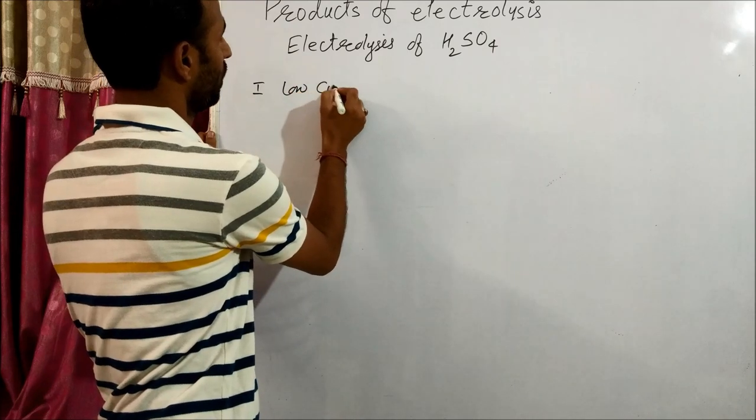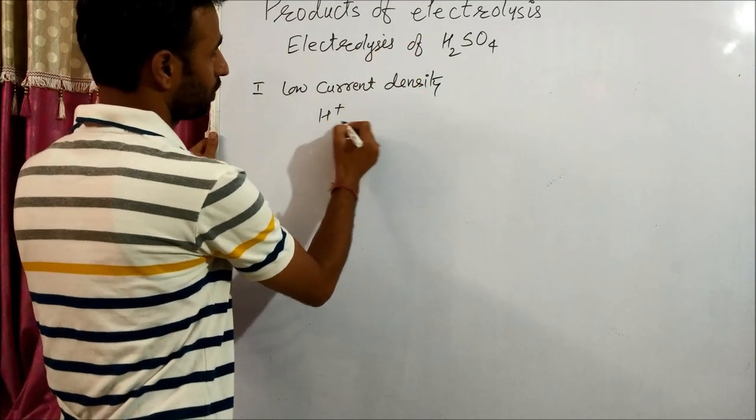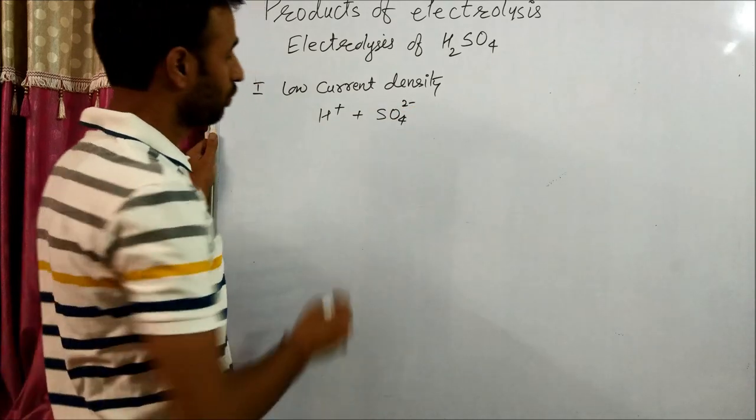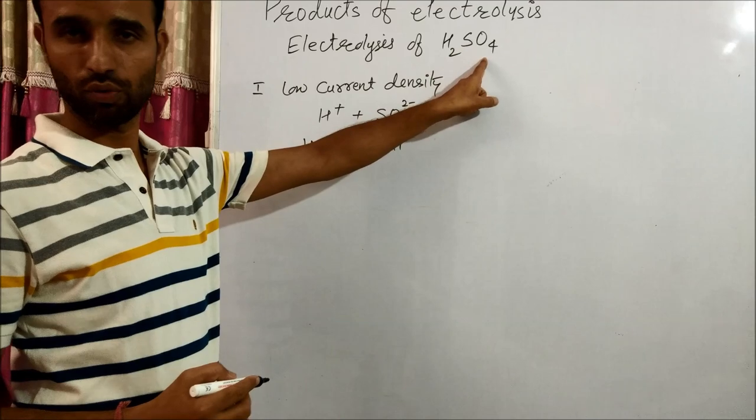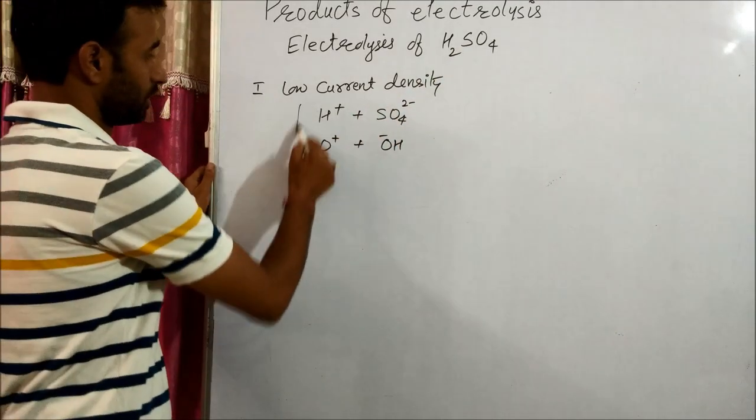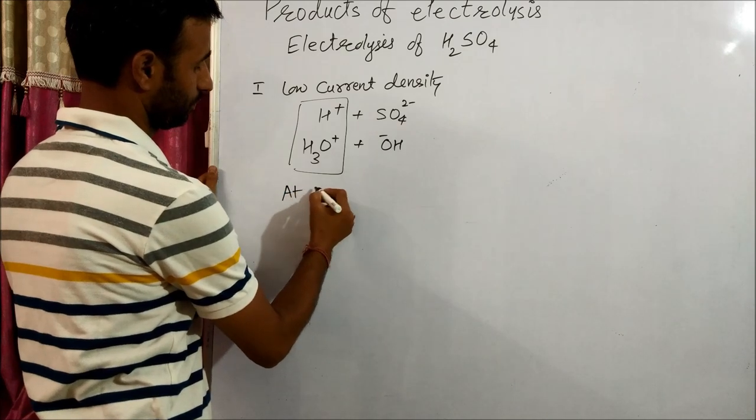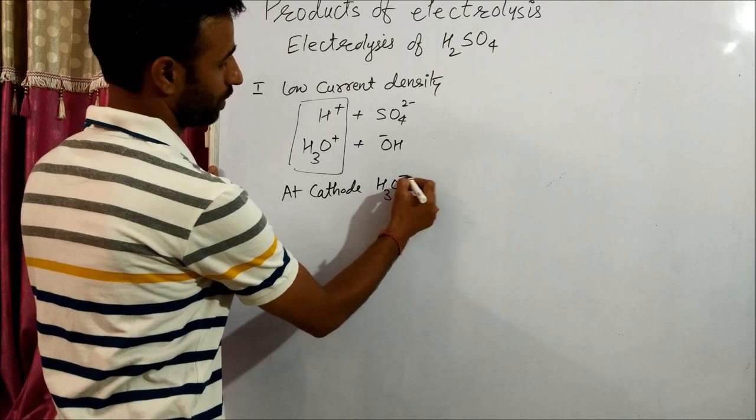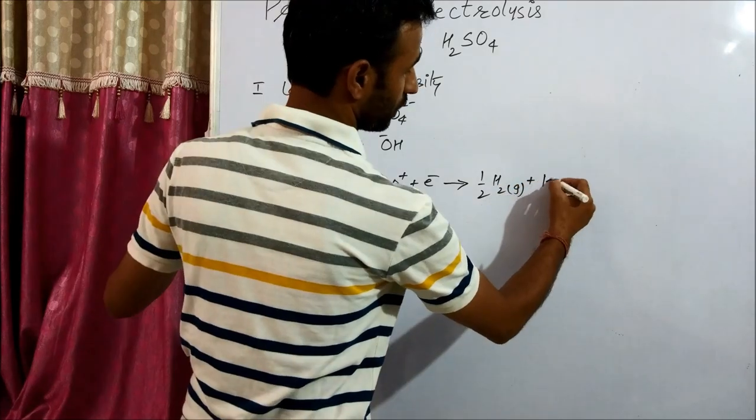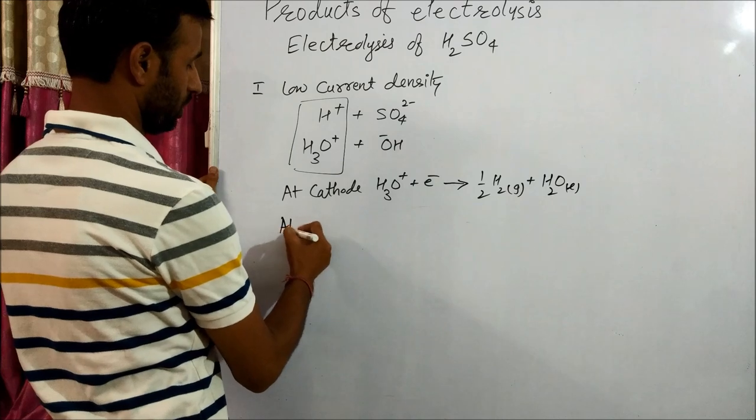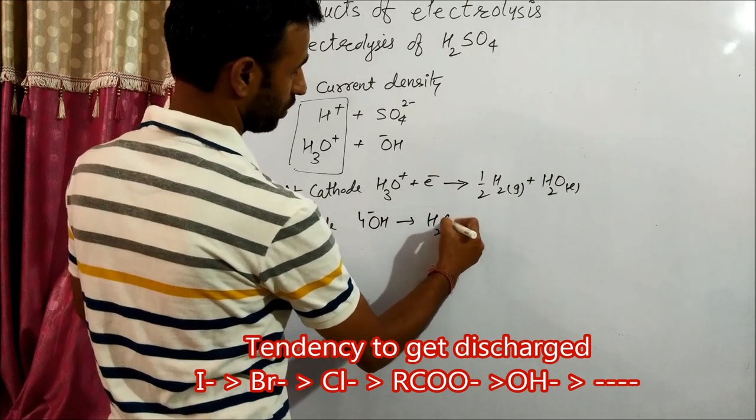First case at low current density. You know H2SO4 gives H+ ion and HSO4- ion. Water will give H3O+ and OH-. These are the ions from H2SO4 and these are the ions from water. Again at low current density, out of H3O+ and H+, at cathode H3O+ gains electron to give half H2 gas plus H2O liquid. And at anode OH- ion will lose electron to give H2O plus O2.